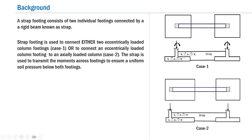In Case 1, both column footings are subjected to an axial load as well as moments. A stiff strap beam is provided to connect both footings, and its function is to uniformly distribute the moment effects across both footings and to ensure as far as possible a uniform pressure distribution. In industrial structures, below a braced bay with diagonal or chevron bracing, a strap footing is provided so that both column footings act as a single unit.